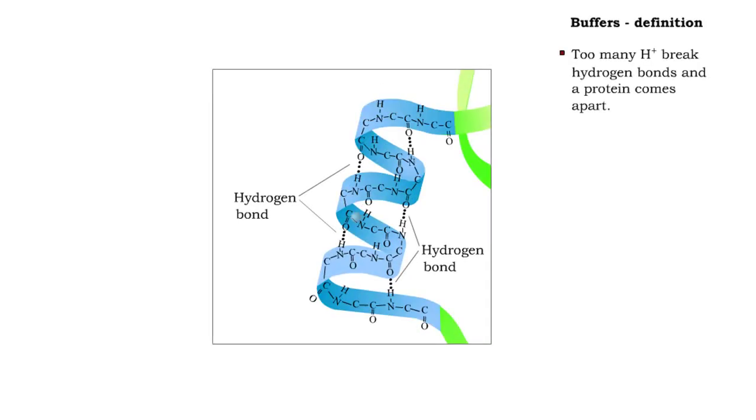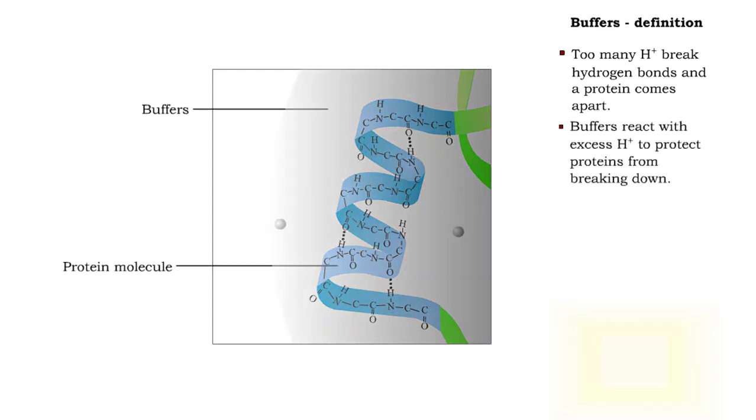Recall that too many hydrogen ions will break down the structure of proteins by breaking hydrogen bonds. The body uses buffer systems to react with excess hydrogen ions. This protects the proteins from breaking down.